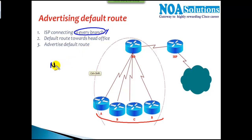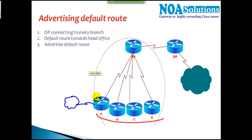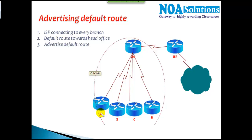The problem with this approach is that it's not scalable. If you have hundreds of branch offices, you need a separate ISP connection at each one. Practically, some locations may not even have ISP connectivity available. Additionally, there's no centralized security — if every branch connects directly to the ISP, you need to install and configure a firewall at each branch to prevent unauthorized access, which becomes very difficult to manage.